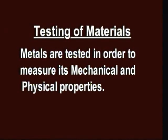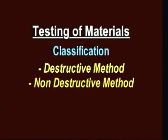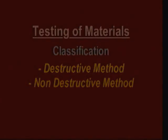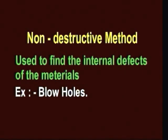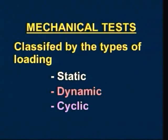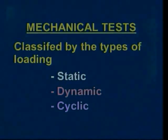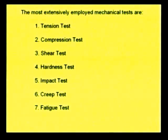Metals are tested to measure their mechanical and physical properties. There are two different methods: the destructive method and the non-destructive method. In destructive methods, we find the physical and mechanical properties of materials; in non-destructive methods, we find internal defects such as blow holes and cracks. Mechanical tests may be classified by the method: static, dynamic, and cyclic tests. The different methods available for laboratory testing are: tensile test, compression test, shear test, hardness test, impact test, creep test, and fatigue test.